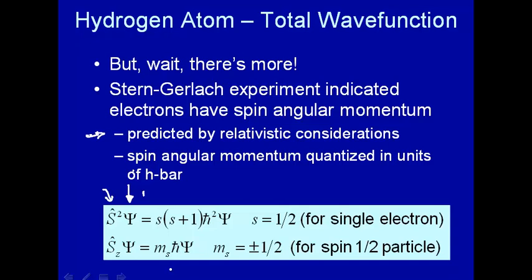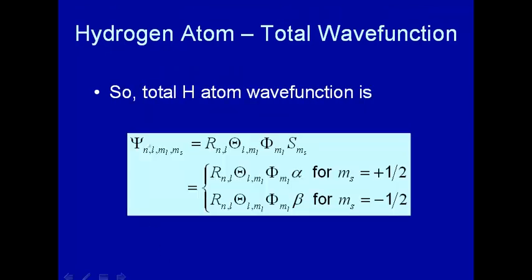So, there we have it, additional information about the wave function. They have to tack on to that wave function that depends on spatial coordinates, a wave function that is due to intrinsic spin. So finally, this is the total hydrogen atom wave function. We have the radial part, and then we have the angular parts, one that depends on theta, and one that depends on phi, and this is all the spatial stuff.